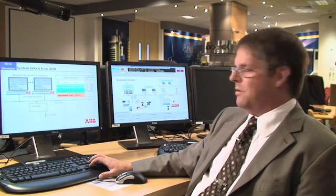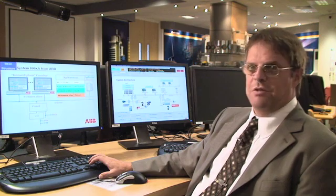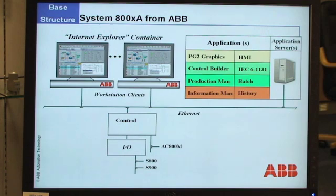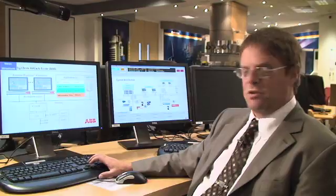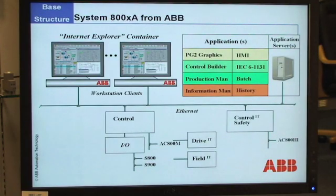We then need to add the control, so we select the controller which links into the standard Ethernet and we use the 800M controller of the size relevant for the application. We select the suitable I/O for the suitable industry and area — S800 or S900. We then determine whether we require fieldbus connectivity using Profibus, Foundation Fieldbus or HART, whether we want connections to drives and motors via Profibus or Optical, and whether we want a control application in SIL 3 and select the safety controller.